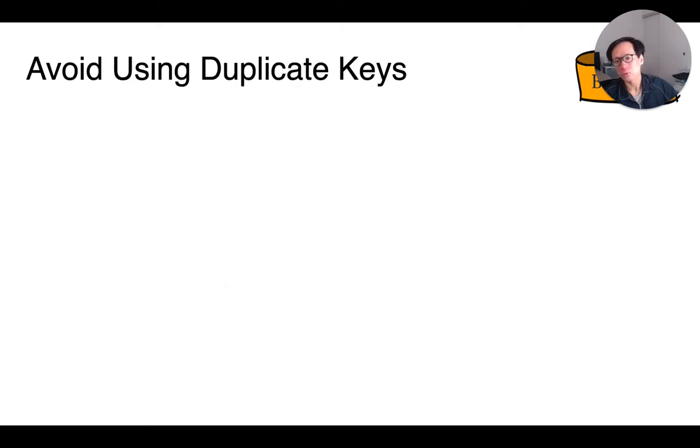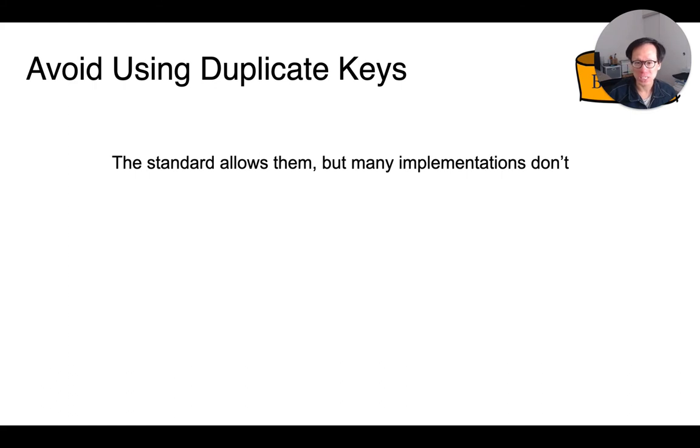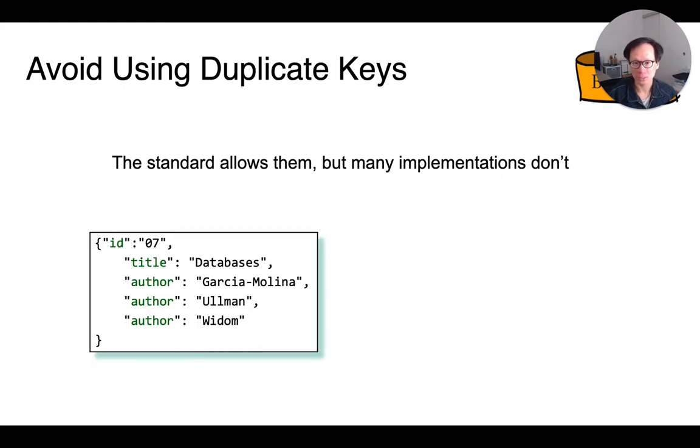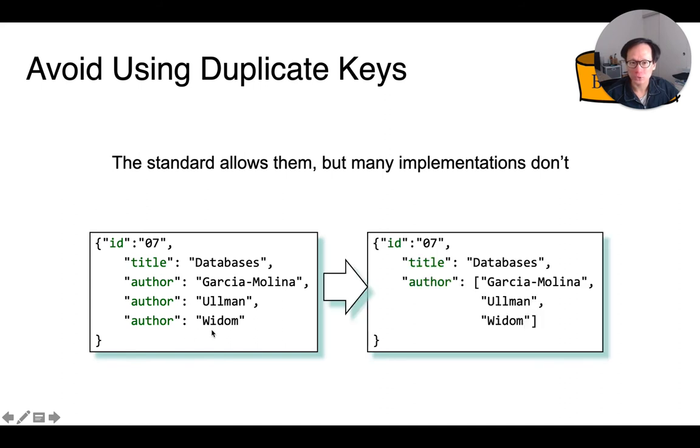Now, while the JSON standard allows storing duplicate keys in the same object, this is highly discouraged for obvious reasons. So here, rather than storing multiple author key-value pairs, we should store them using an array of strings instead.